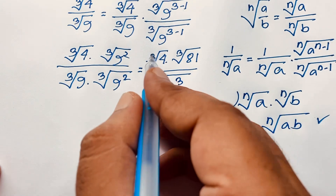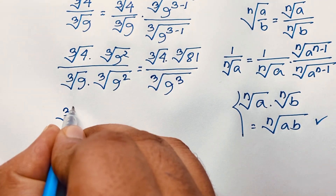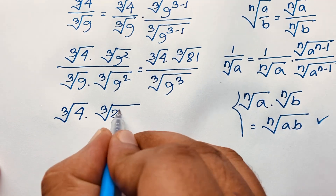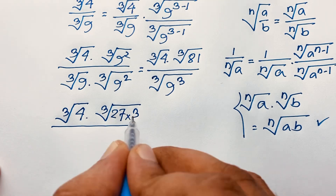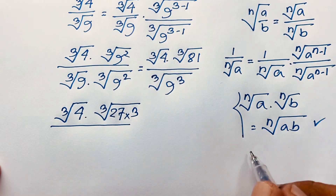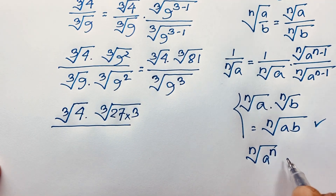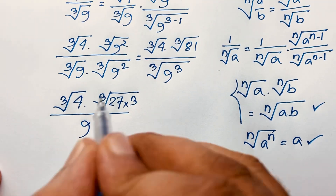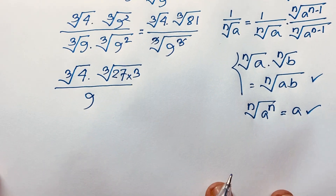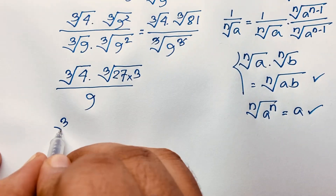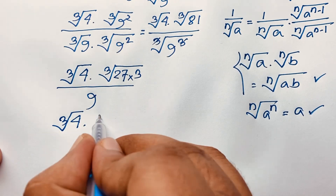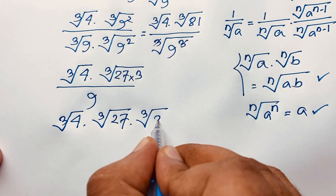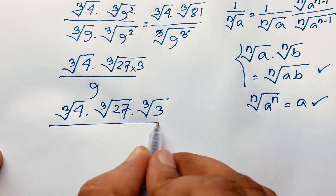Now, cube root 4 and cube root 81 over 27 times 3. Applying the formula that the n-th root of a to the power n equals a, here cube root of 9 to the power 3 equals 9, so the 3 cancels out. We get cube root 4 times cube root 27 times cube root 3, over 9.